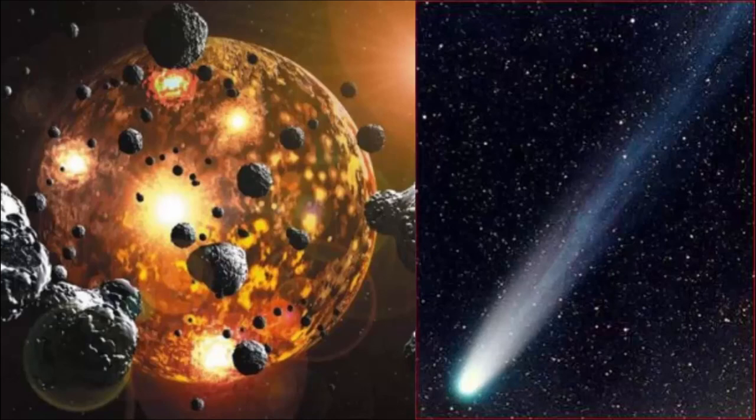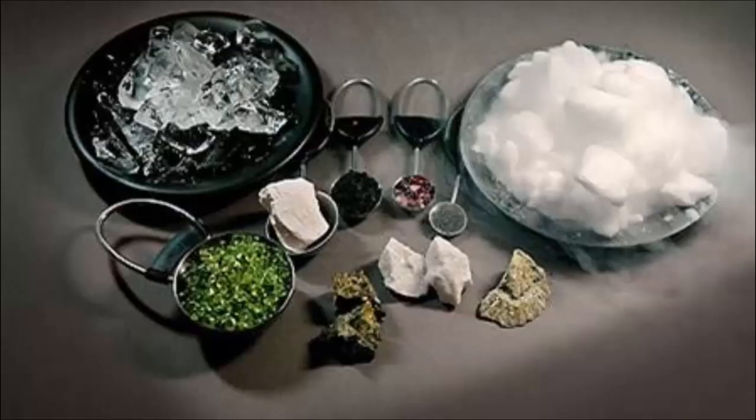Although comets collide with our planet regularly, because of their composition, they burn up and are absorbed by our atmosphere. To study the whole comet, we send spacecraft through the tails of comets whose orbits bring them close to Earth. Based on these exploratory missions, here is a NASA visual of what makes up comet soup.